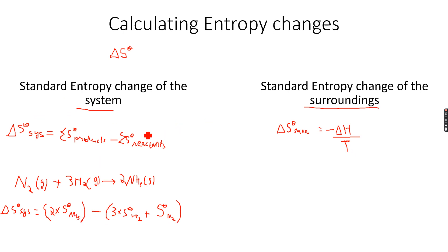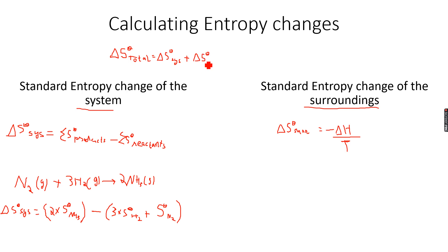We now have formulas for both Delta S naught system and the entropy change of surroundings. The total entropy change is Delta S naught total, which equals Delta S naught system plus Delta S naught surroundings. If the total entropy change is positive, the reaction is feasible. If it is negative, the reaction is not feasible.